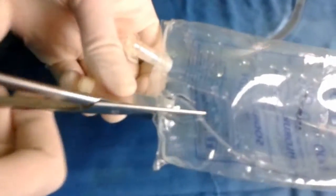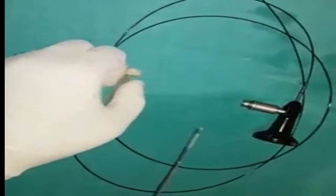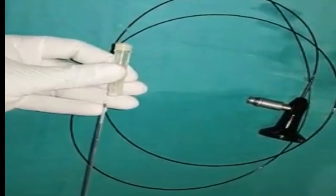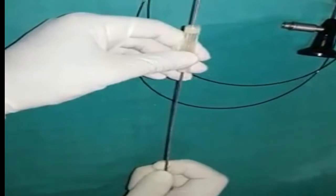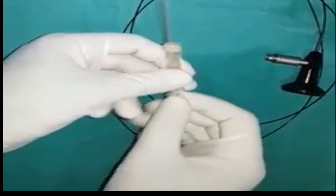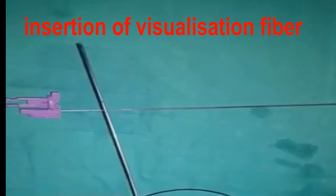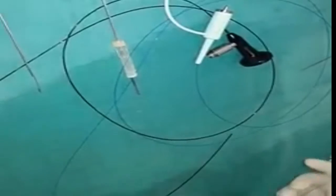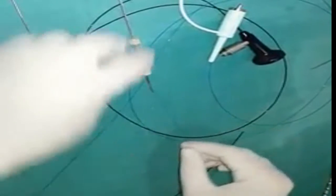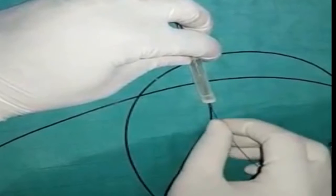The injection port of a serum bag is harvested. The 16 gauge needle is inserted through the injection port from the inside. Insertion of the visualization fiber and then of the laser fiber 273 micron.